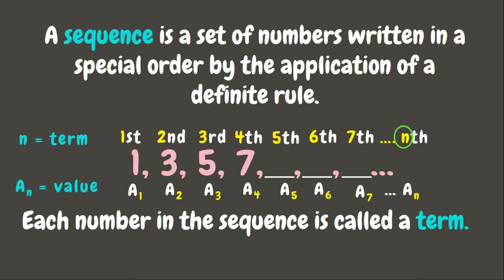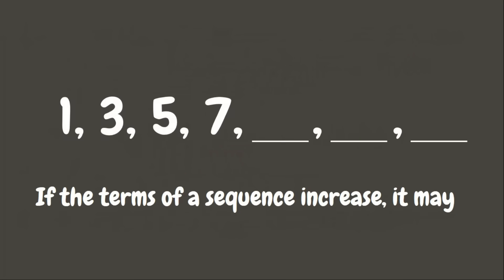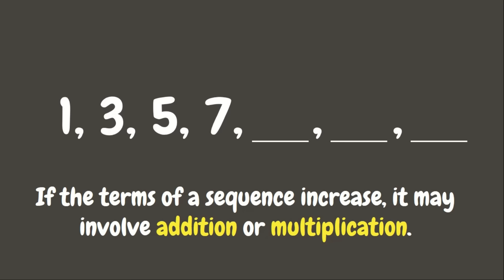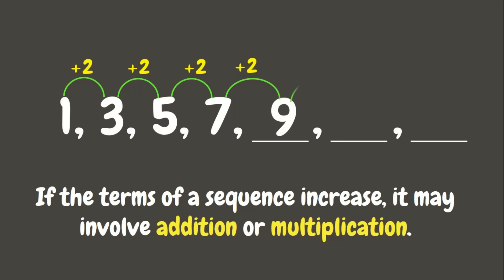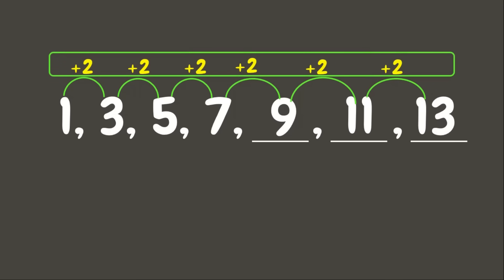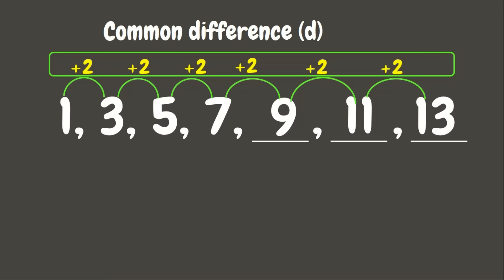Now let us try to find and solve for the next three numbers of this sequence. If the terms of a sequence increase, it may involve addition or multiplication. We need to add 2 to get from one term to the next: 1+2=3, 3+2=5, 5+2=7, 7+2=9, 9+2=11, and 13. This constant value is called the common difference, represented by the letter d, which is 2 here.